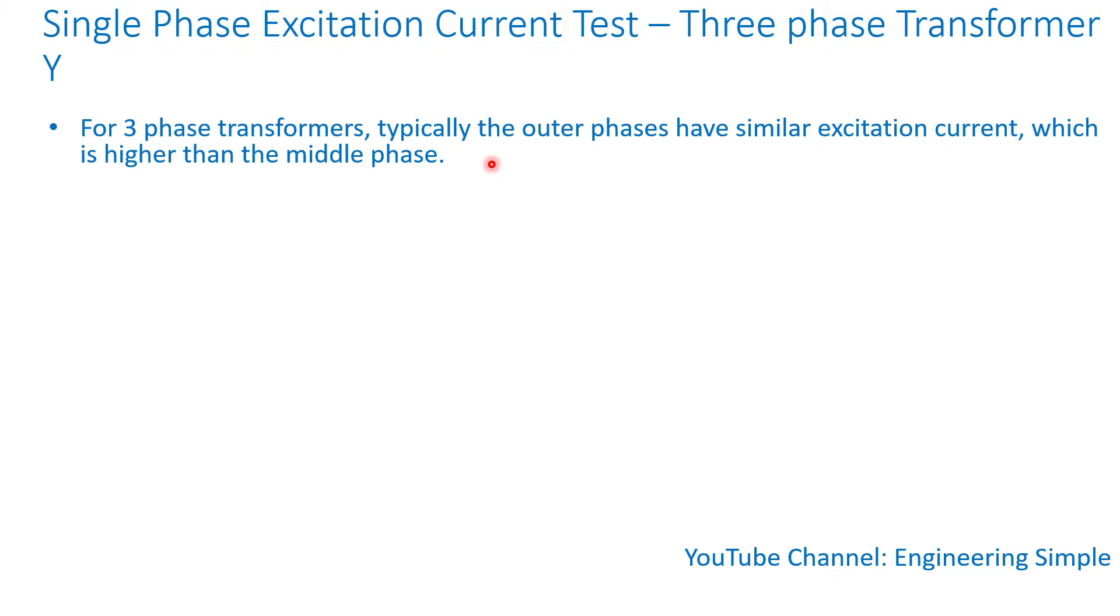So if you have A, B, C phases with B phase in the middle, the A and C phases will have almost the same excitation current value, which will be higher than the middle phase. And the reason for that is because those outer phases have a long magnetic path.